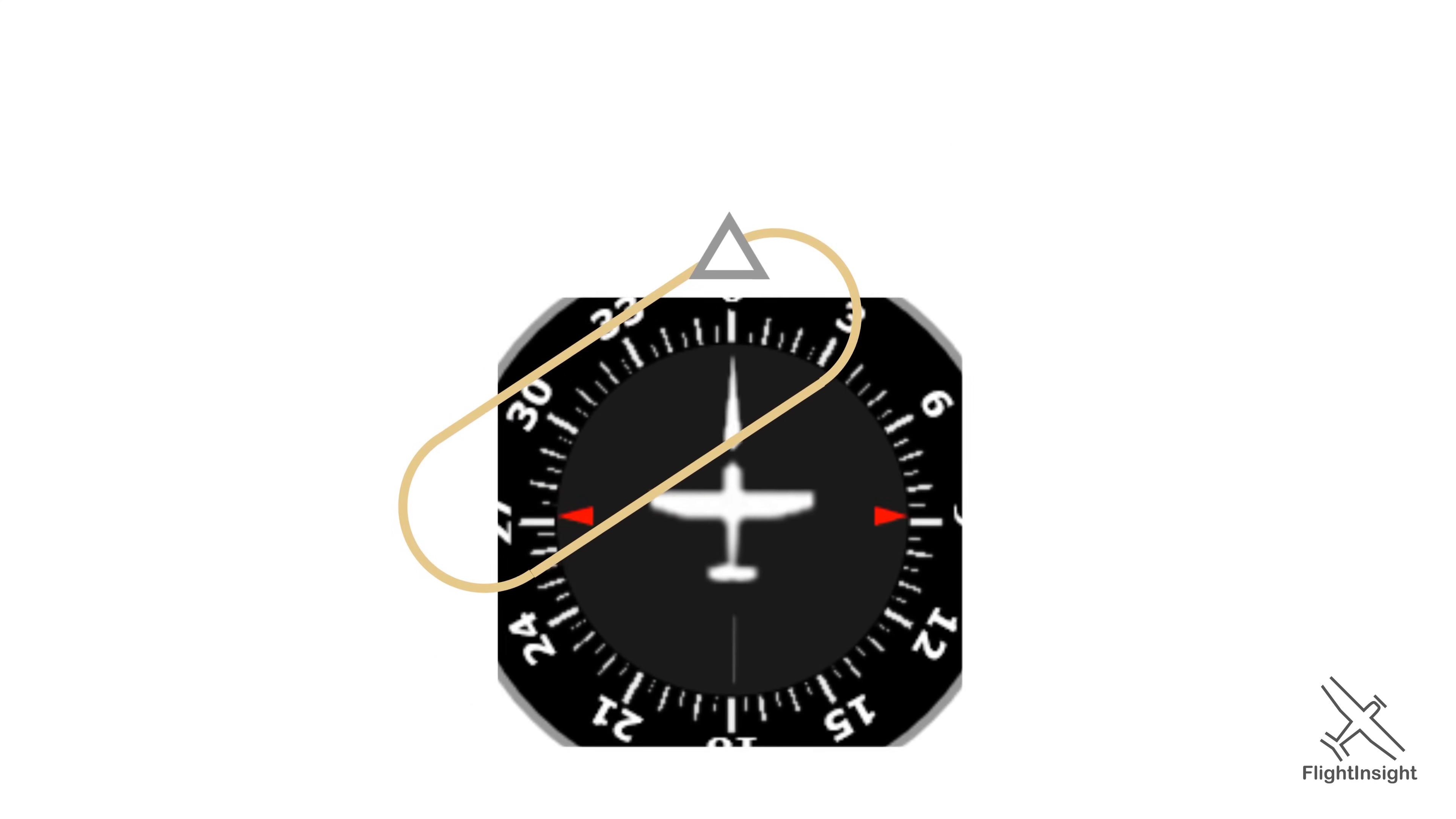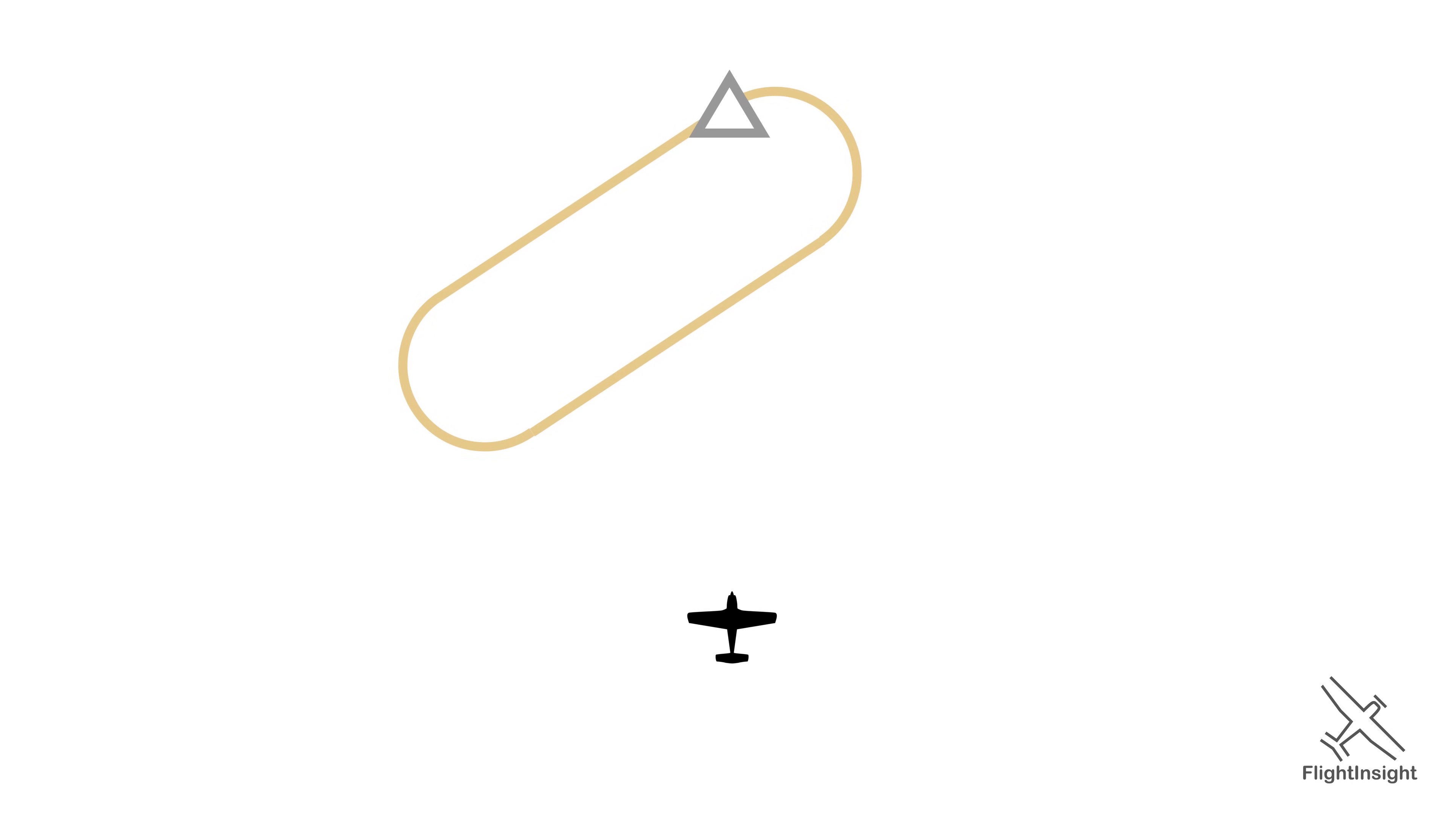So let's see what kind of entry makes sense. Here's the pattern, and there's our plane approaching it. We'll fly to the fix, join the right turn outbound, and fly the outbound leg. This is the direct entry.